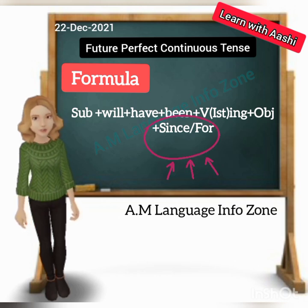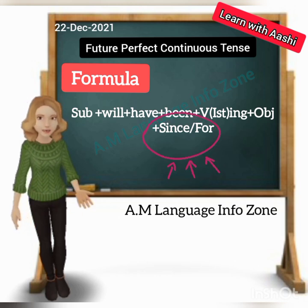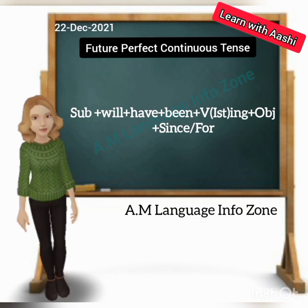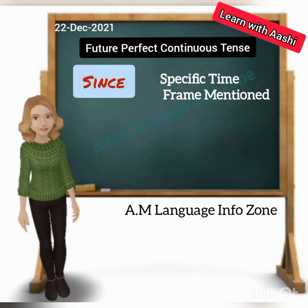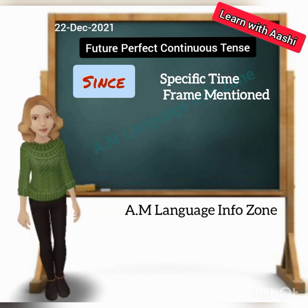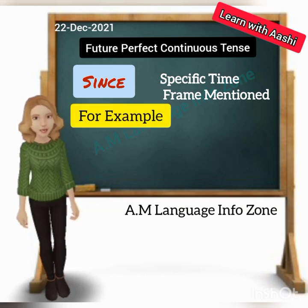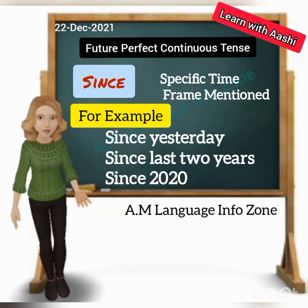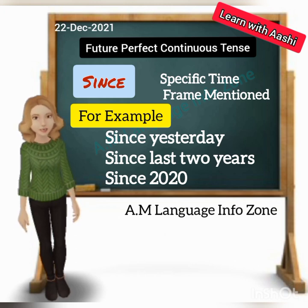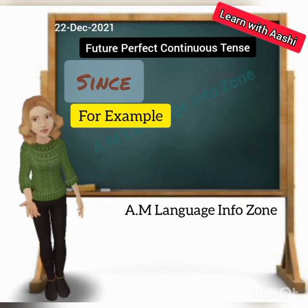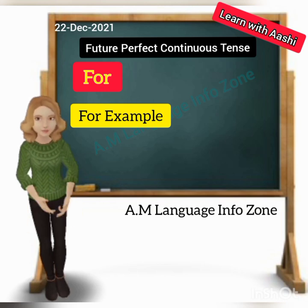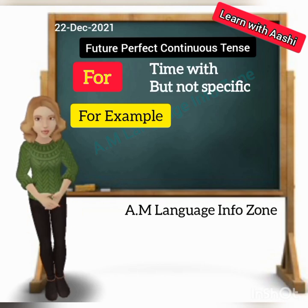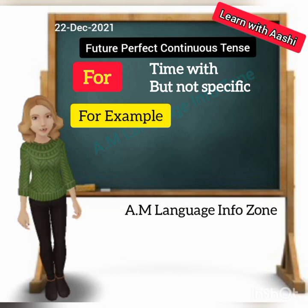Let me explain: 'Since' is used in sentences where there is a specific time frame mentioned — like 'since yesterday,' 'since last two years,' 'since 2020.' On the other hand, we use 'for' in sentences where time is mentioned in the sentence but has no fixed limits or no specific reference point.